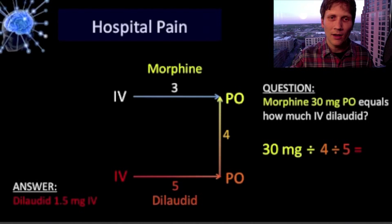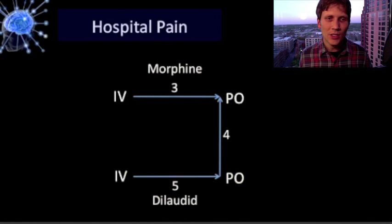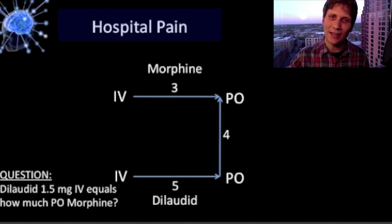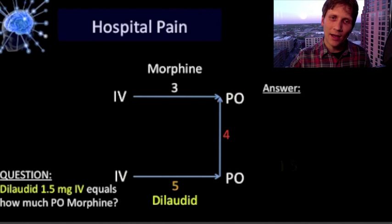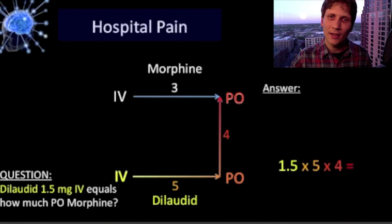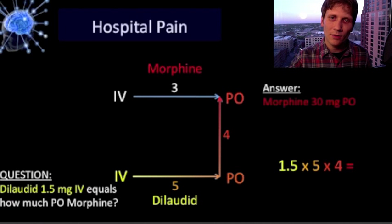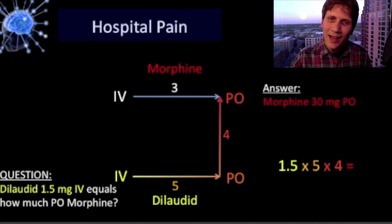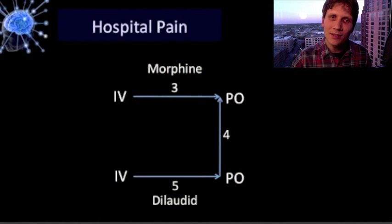Next example: dilaudid 1.5 milligrams IV — how much PO morphine? Now we're going in the other direction. We go with the arrow to PO dilaudid, then with the arrow again to PO morphine, so we multiply by five and then by four. Our answer is 30 milligrams PO morphine.